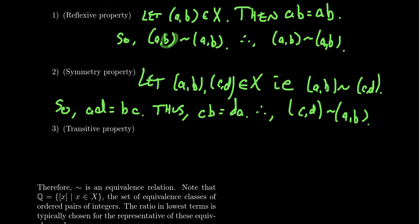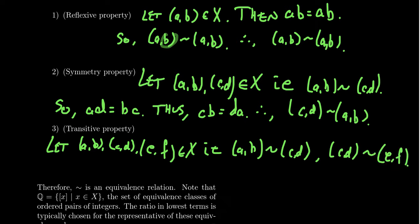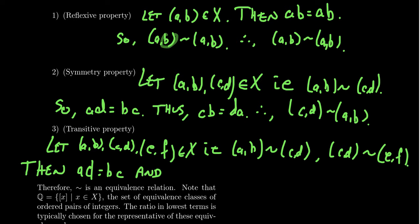For transitivity, we assume three elements (A, B), (C, D), and (E, F) in X such that (A, B) is related to (C, D) and (C, D) is related to (E, F). We want to infer that (A, B) is related to (E, F). Unraveling the definitions: the first relationship gives us AD equals BC, and the second relationship gives us CF equals DE.